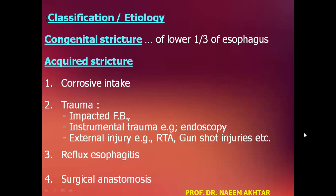Then trauma to the esophagus: it may be due to impacted foreign body, or instrumental trauma such as endoscopy. Sometimes external injury, for example road traffic accidents or gunshot injuries, may also lead to stricture formation. Reflux esophagitis and surgical anastomosis may also lead to stricture formation.